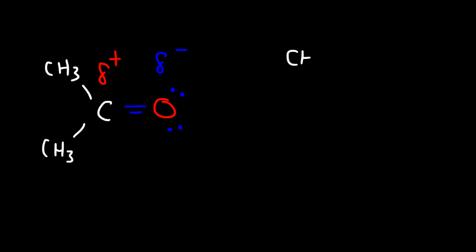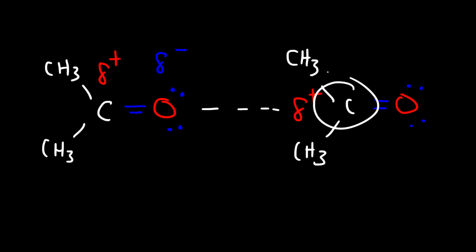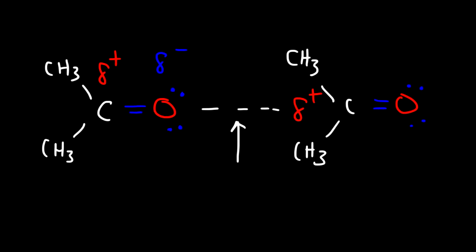The oxygen atom has a partial negative charge and the carbon atom has a partial positive charge. If that acetone molecule is placed nearby another acetone molecule, there's going to be a dipole-dipole interaction. The carbon from the second molecule is going to be attracted to the oxygen of the first molecule because opposites attract, creating the dipole-dipole interaction.